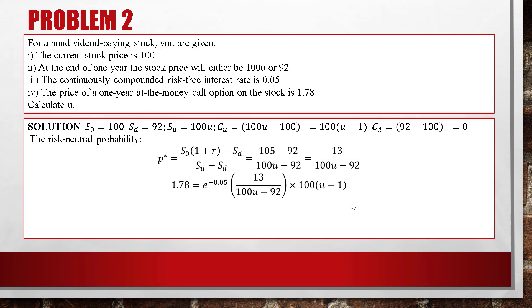Multiplying both sides by (100u − 92), we get 178u − 163.78 = 36.6u − 36.6. Solving for u, we get u = 1.0135. So the answer is 1.0135.